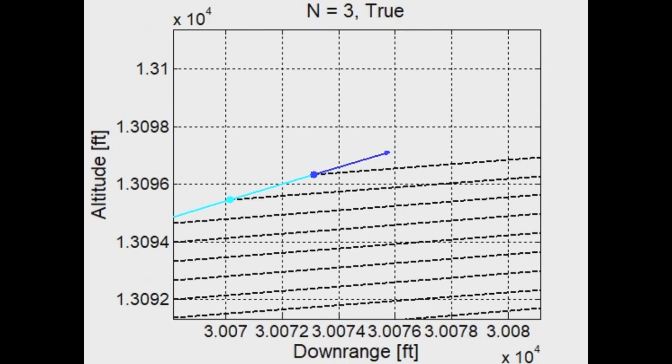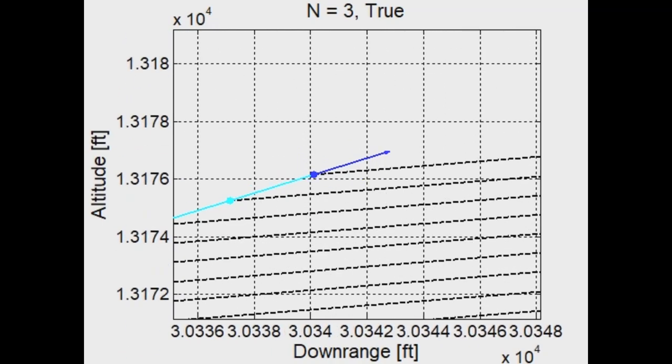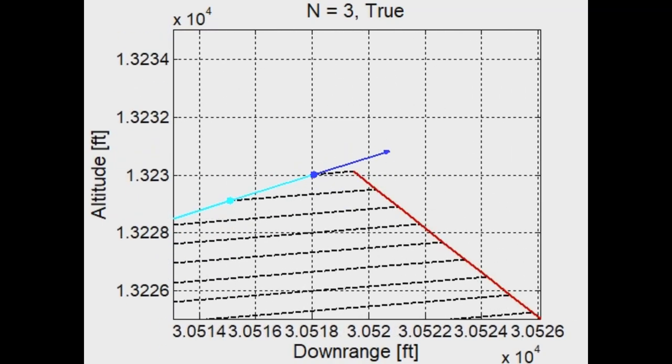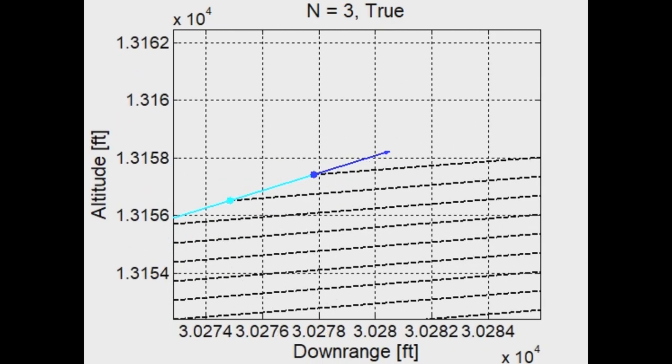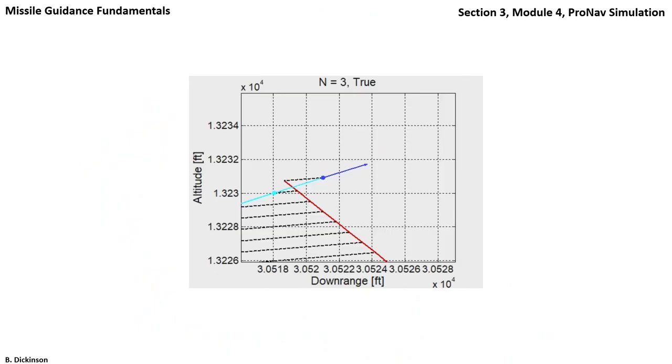And just moments before collision, we see the relative spacing between the range vectors is constant, and the lead angle of the pursuer is also not changing, indicating that a collision triangle has been achieved.